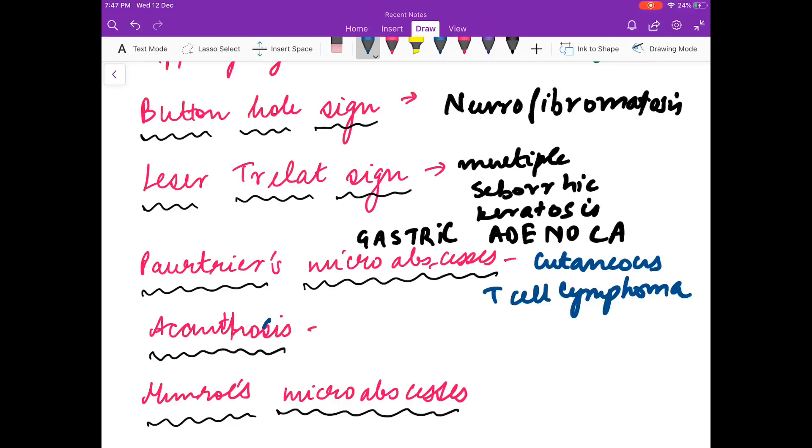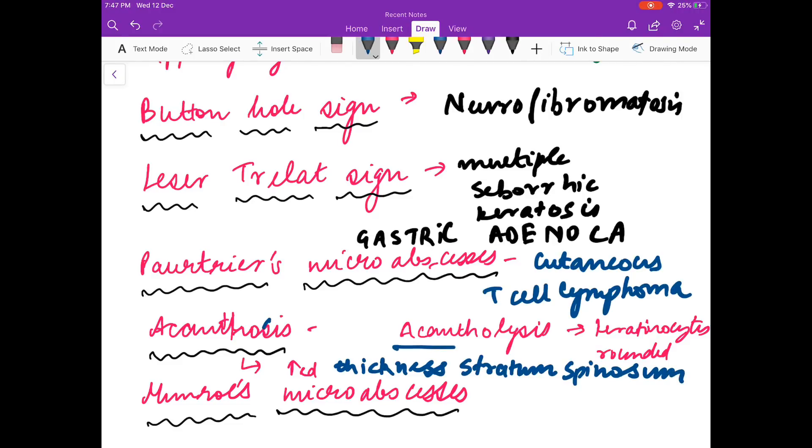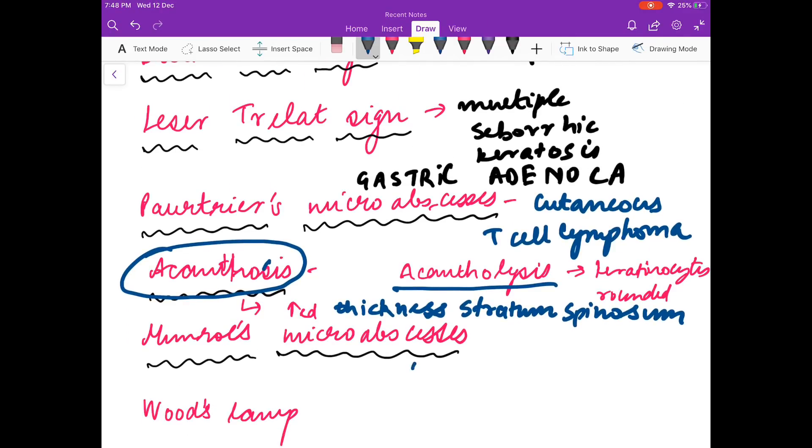What is acanthosis? You know what is acantholysis: when keratinocytes become rounded. So there is another term called acanthosis. Acanthosis means increase in the thickness of stratum spinosum. There is a difference between acantholysis and acanthosis. Munro's microabscess is seen in psoriasis.